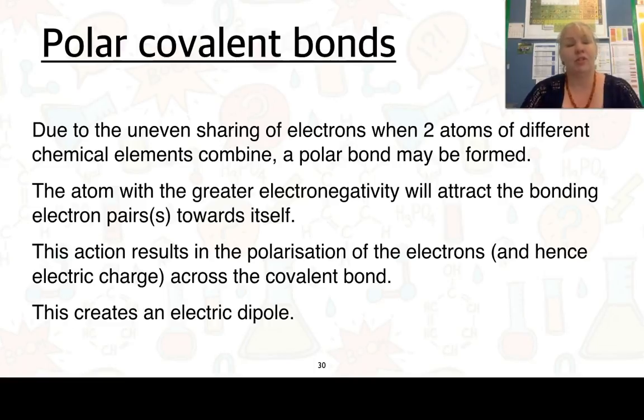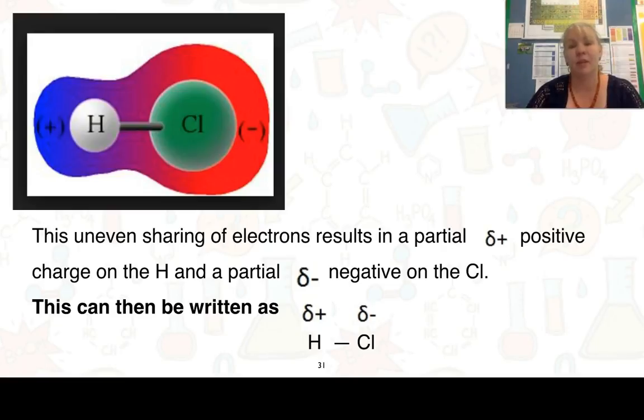Polar covalent bonds occur due to the uneven sharing of the electrons. In a covalent bond, we're sharing two or more electrons. If those atoms that are sharing are identical, then the sharing will be even. If those two atoms that are sharing the electrons are not identical, then the sharing will become less equal. The atom with the greater electronegativity attracts the bonding electron pairs towards itself a little more. This action results in the polarization of the electrons and the electric charge across the covalent bonding.